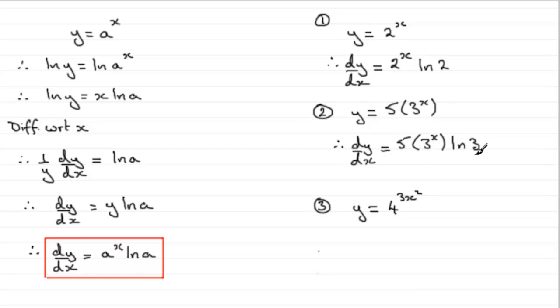There's nothing we can do to tidy this up. So, I'd leave it like that. And for number 3, I picked this one because you can see that here, I haven't just got x. I haven't got 4 to the power x, but we've got a composite function here, 3x squared. So, how do I do this?